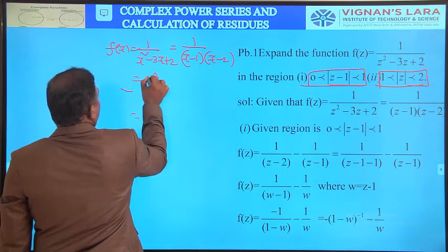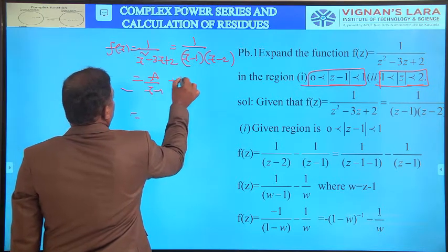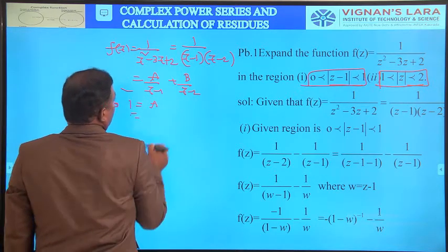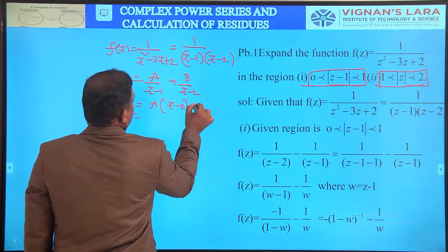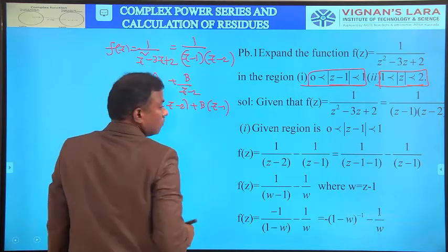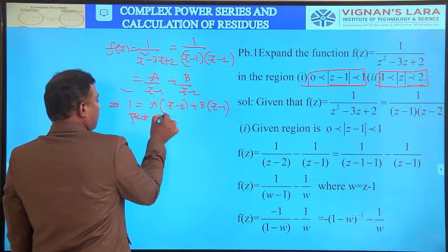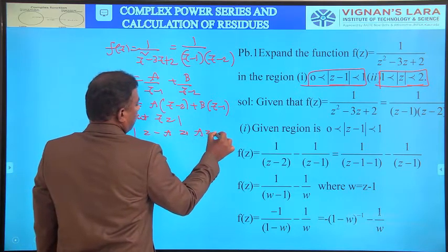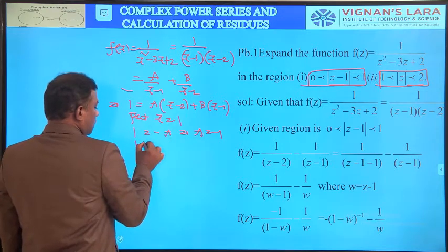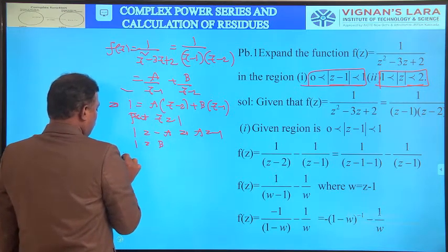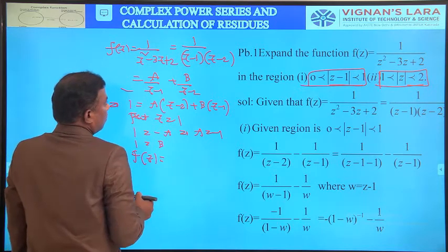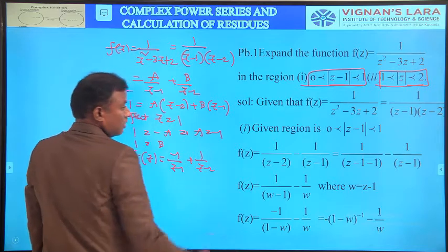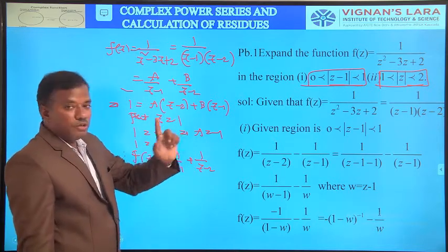Resolving into partial fractions: 1/[(z-1)(z-2)] = A/(z-1) + B/(z-2). After taking LCM: 1 = A(z-2) + B(z-1). Putting z=1: 1 = A(-1), so A = -1. Putting z=2: 1 = B(1), so B = 1. Therefore f(z) = -1/(z-1) + 1/(z-2).